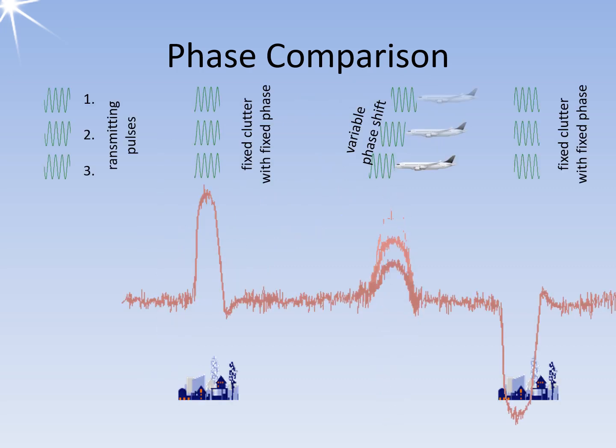With stationary reflecting objects, this phase shift is constant. When comparing the phase with the transmitting pulse, a fixed-in-amplitude video pulse is produced, which points up or down depending on the half-wave of the oscillation.